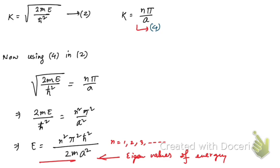So these are the energy eigenvalues for a particle in a 1D infinite square well. If you want me to complete the paper, please like the video — let's aim for at least 100 likes so I can upload the next part soon. Thank you for watching, see you in the next video.